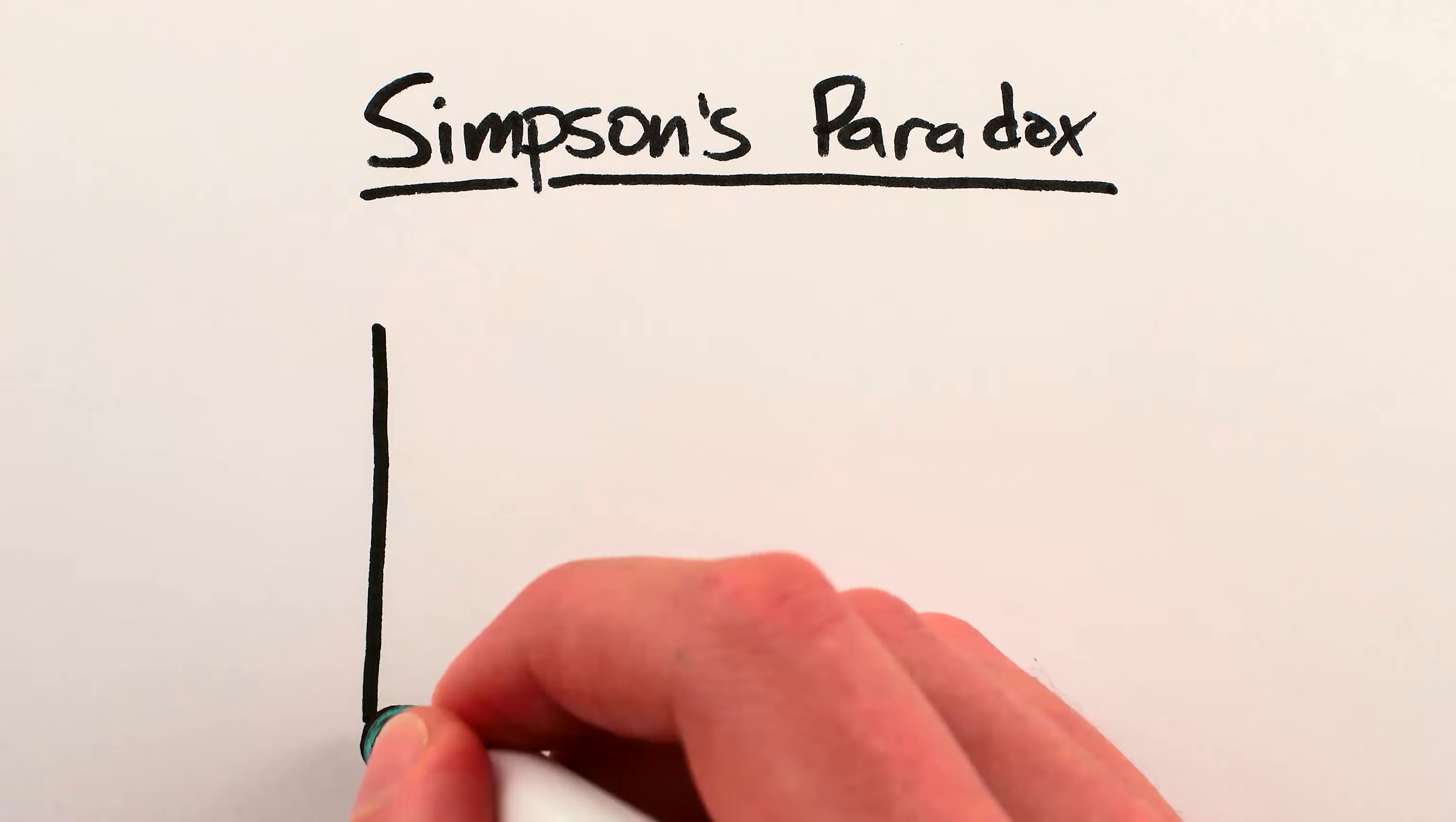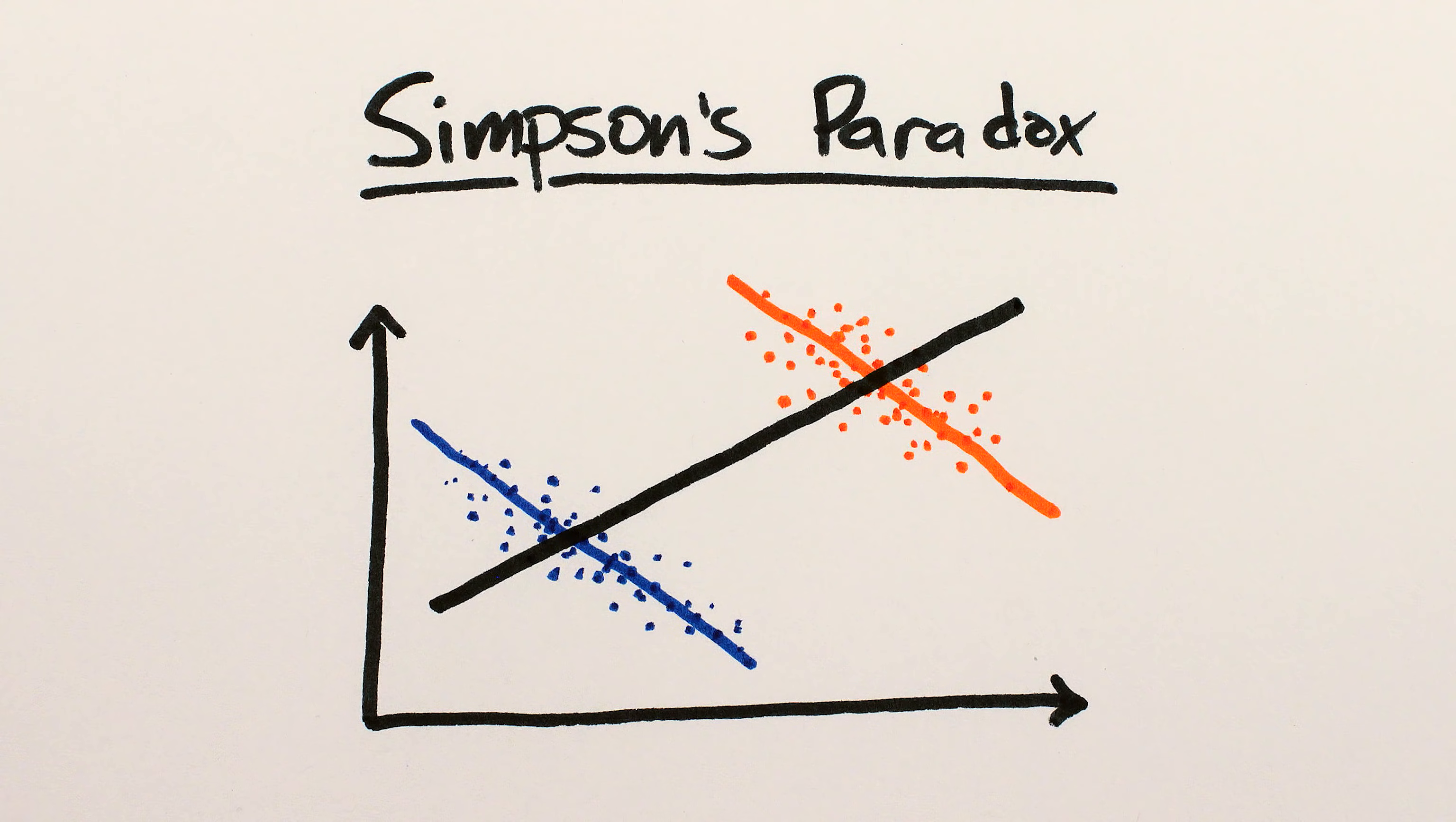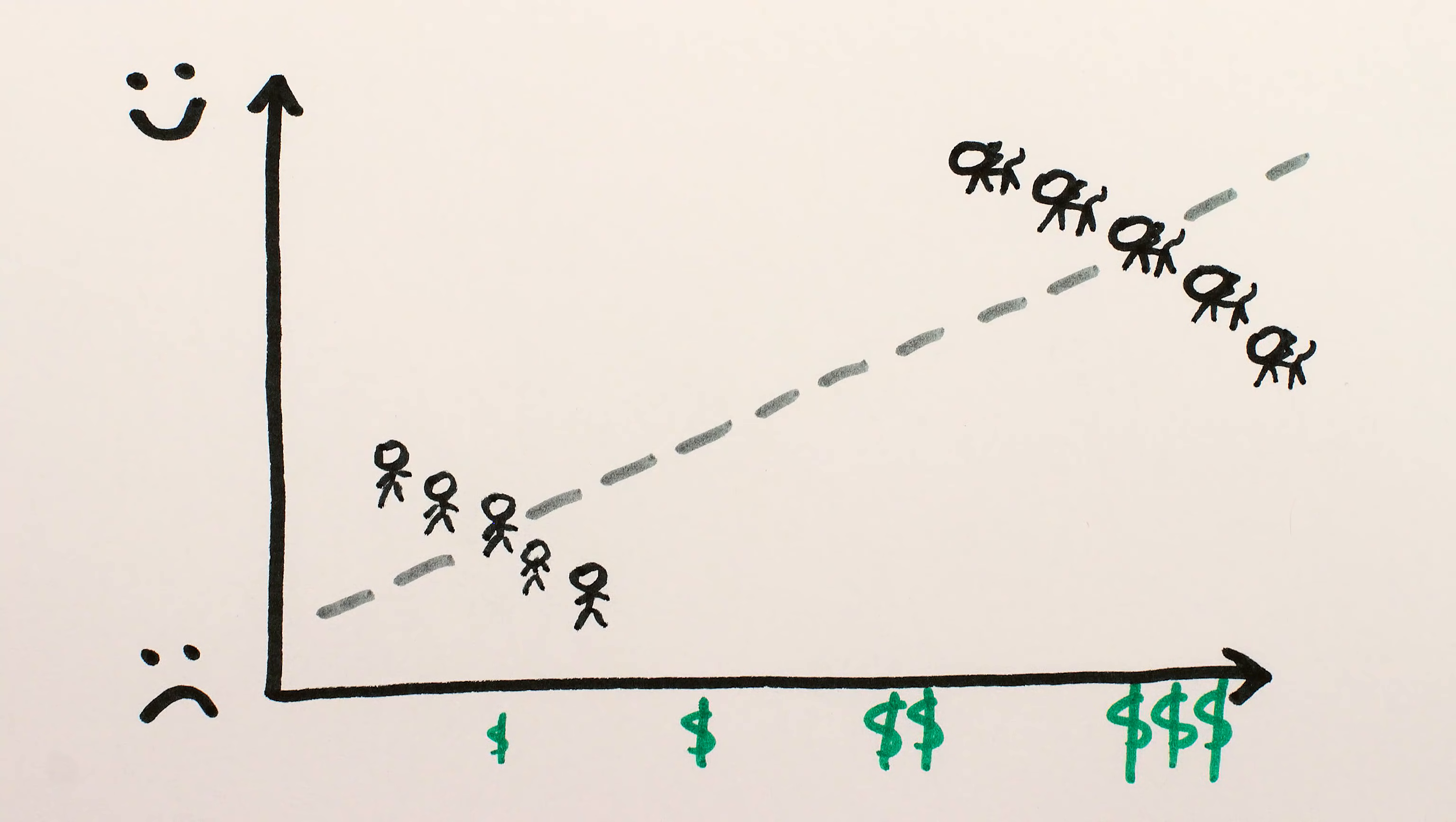In some situations, there's also a nice graphical way to picture Simpson's paradox, as two separate trends that each go one way, but the overall trend between the populations goes the other way. Like, maybe more money makes people sadder, and more money makes cats sadder, but if cats are both much happier and richer than people to start with, the overall trend appears incorrectly to be that more money makes you happier.